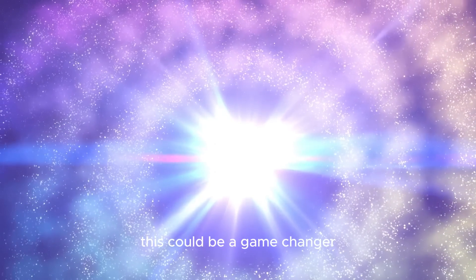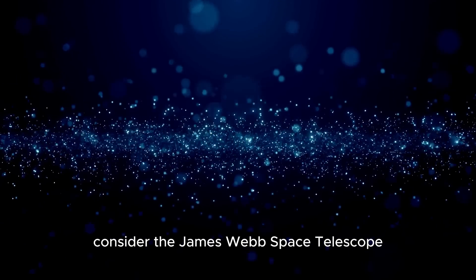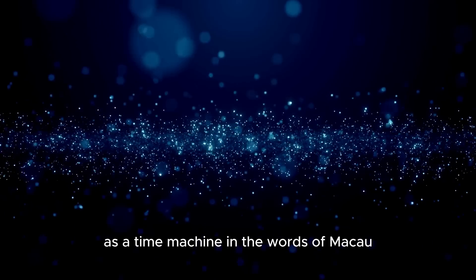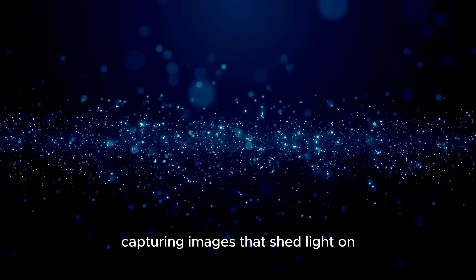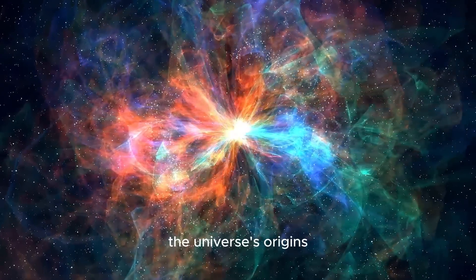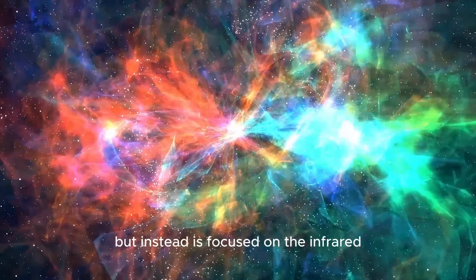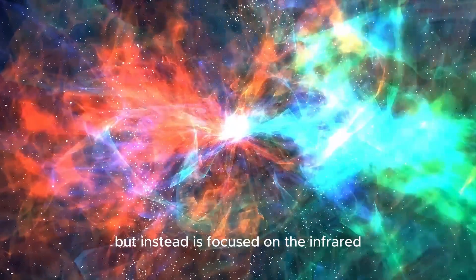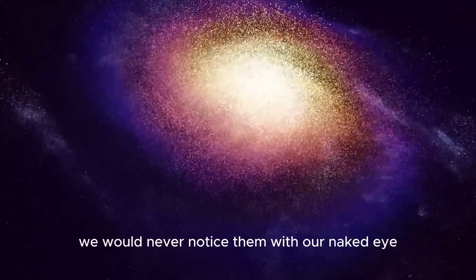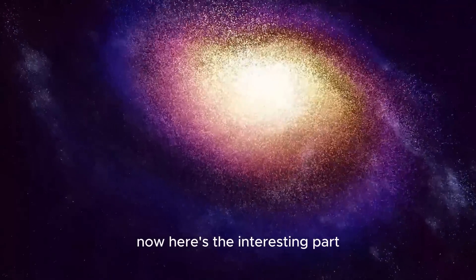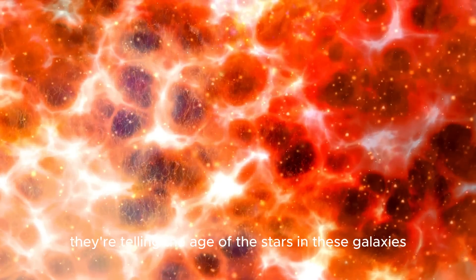Consider the James Webb Space Telescope as a time machine, in the words of Macau, able to peer billions of years back into the universe, capturing images that shed light on the universe's origins. This stunning device isn't snapping photographs in our familiar visual range, but instead is focused on the infrared, revealing hues of galaxies so far off we would never notice them with our naked eye. Now, here's the interesting part. These colors aren't just beautiful, they're telling the age of the stars in these galaxies.